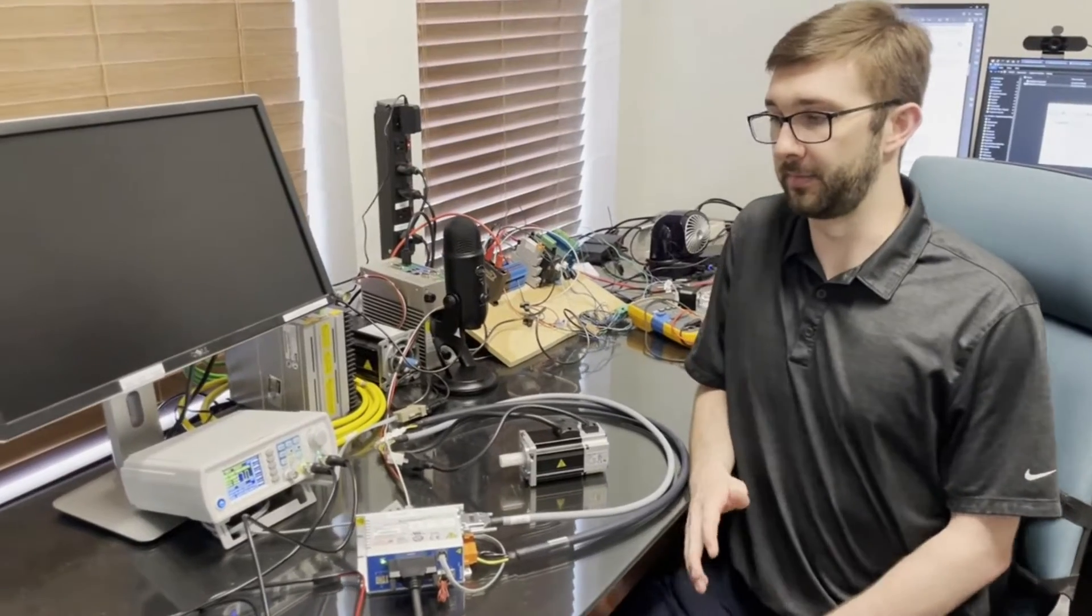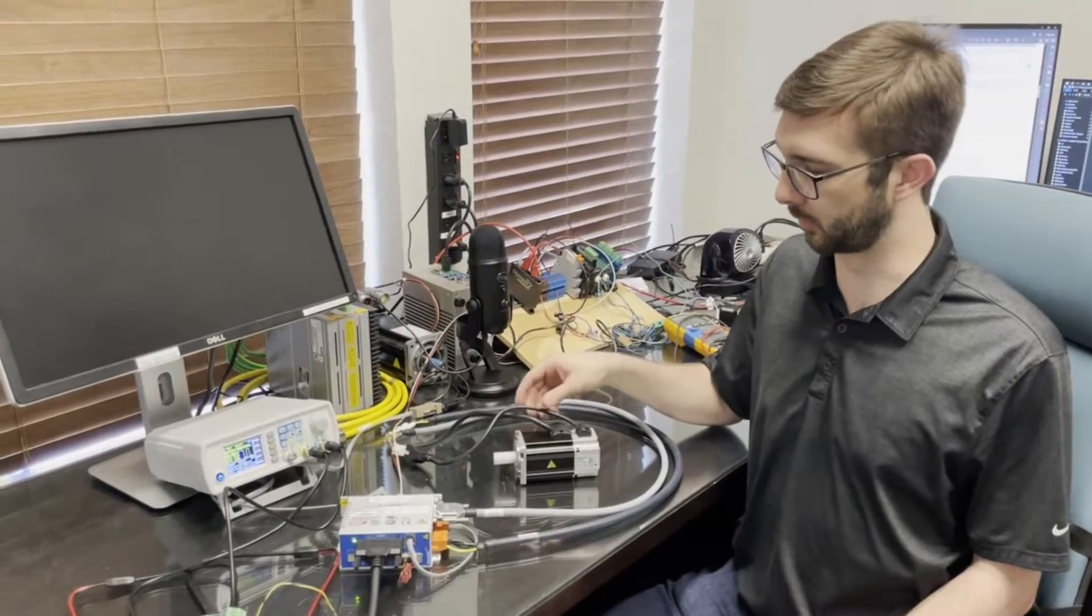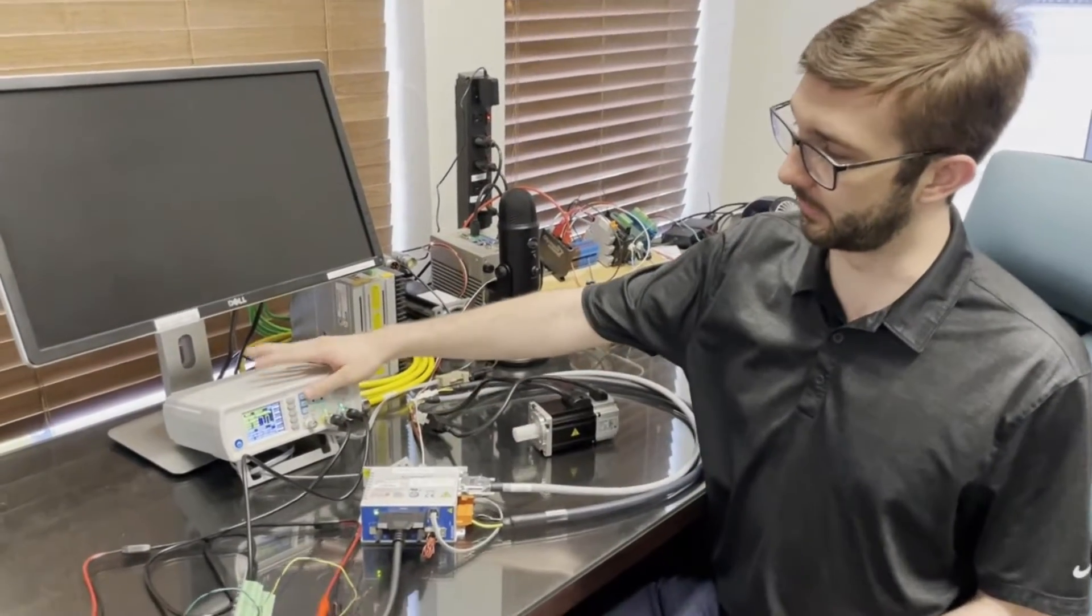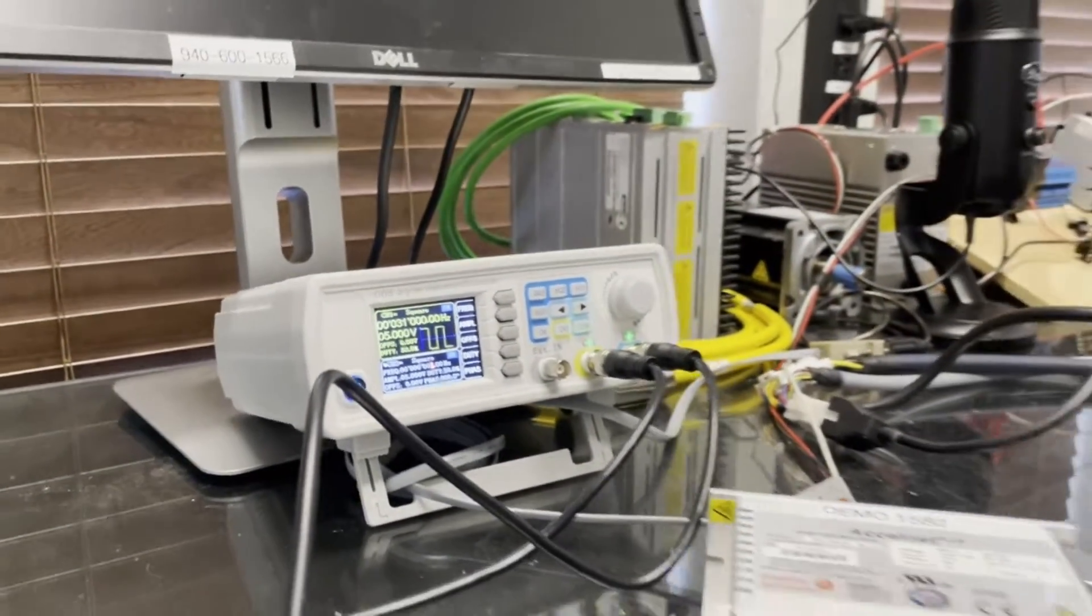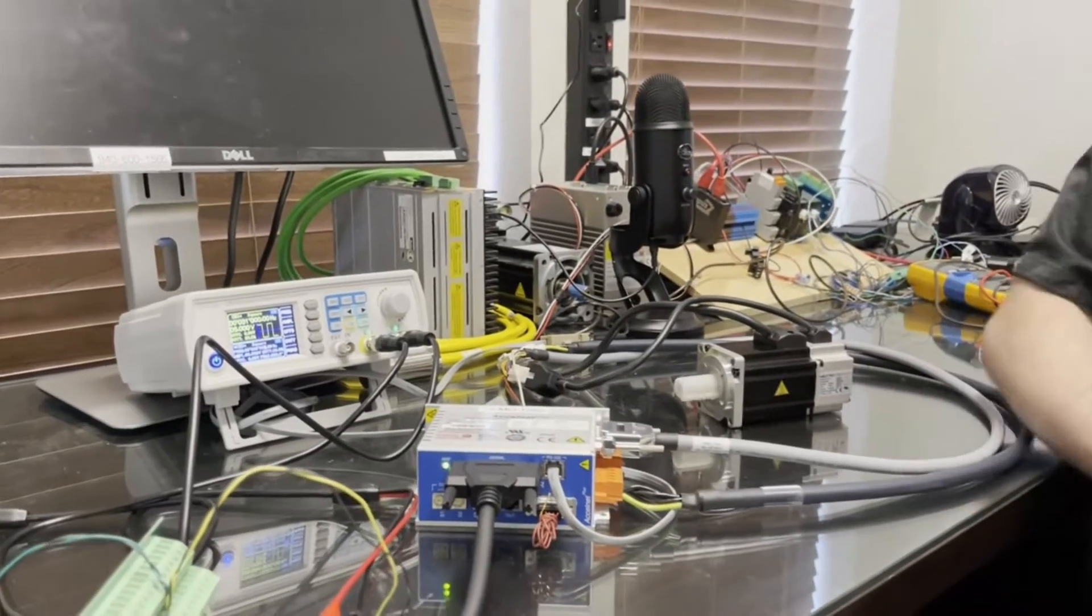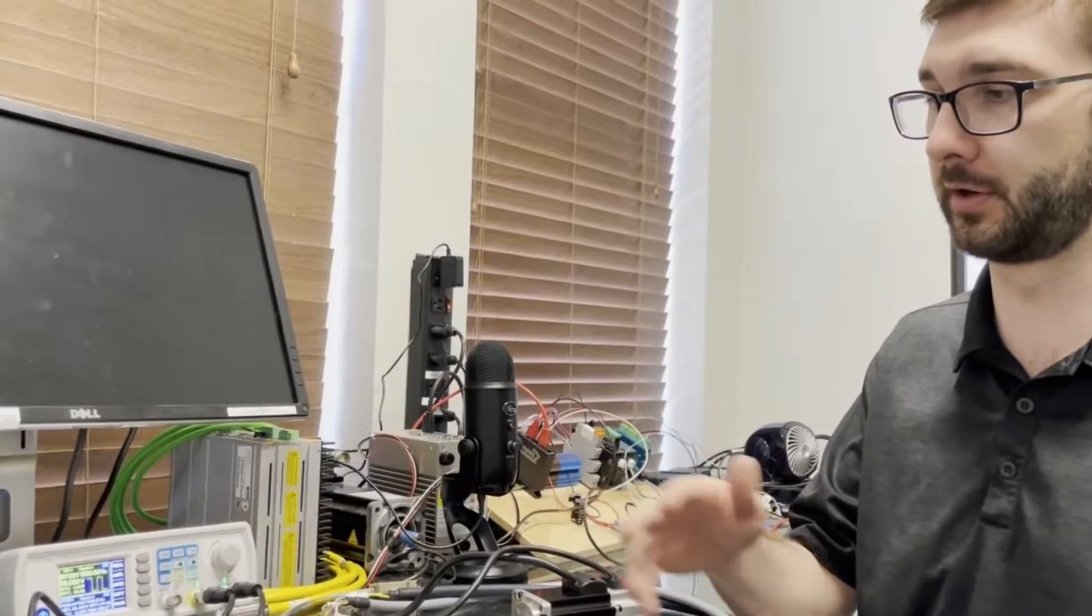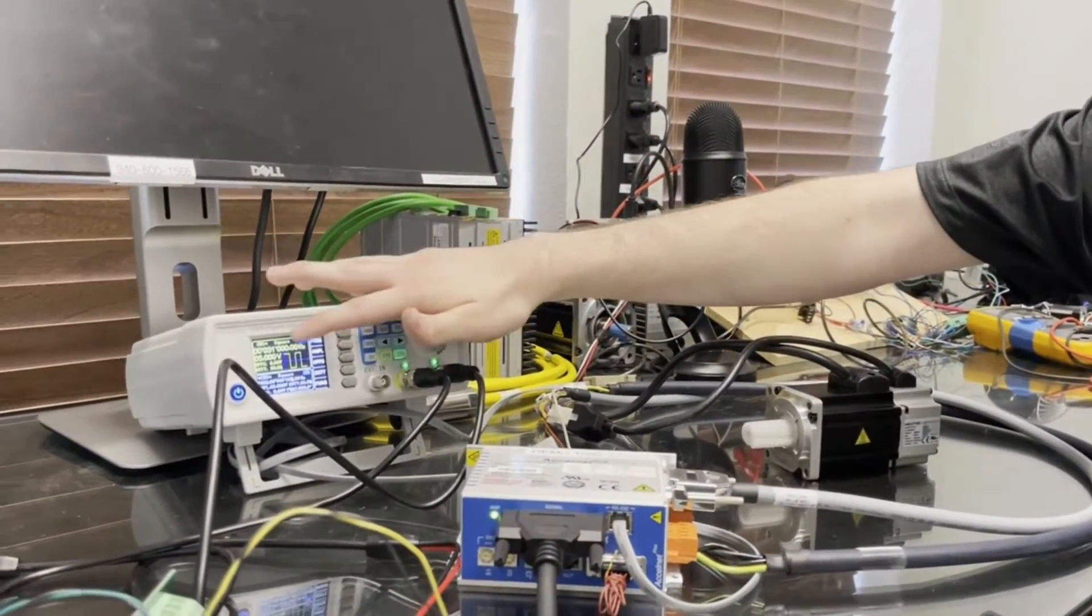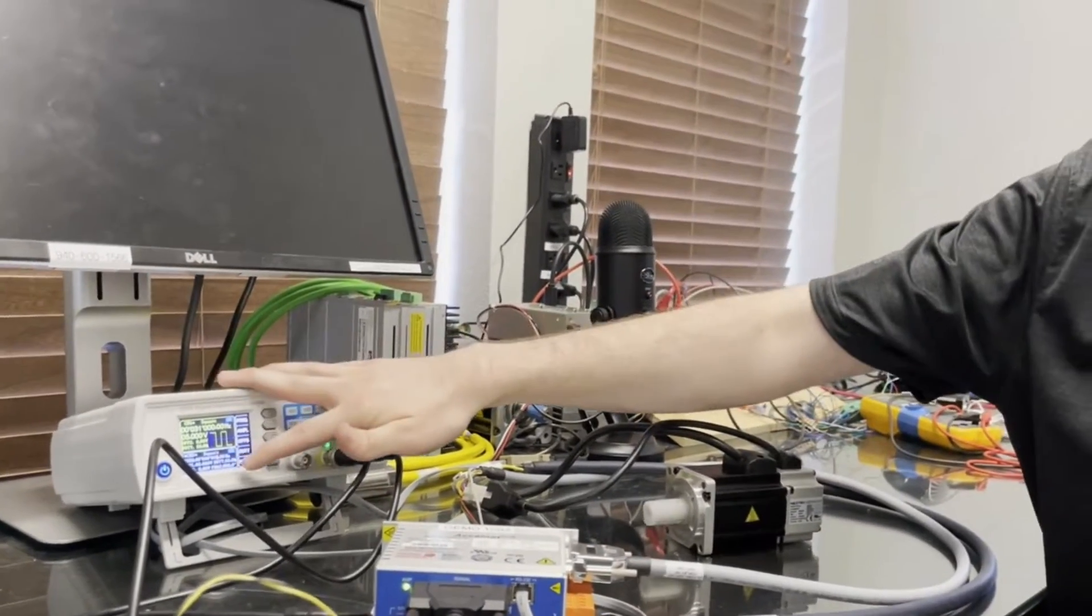So again, the customer already has their controller. They're just wanting to work with us on a drop-in replacement, which is what I'm doing. So I have this signal generator right here to simulate their controller and it's already sending those signals. The step and direction signals, if you're not aware, each signal controls different aspects. Step controls your speed and direction, of course, controls your direction, as the name implies.